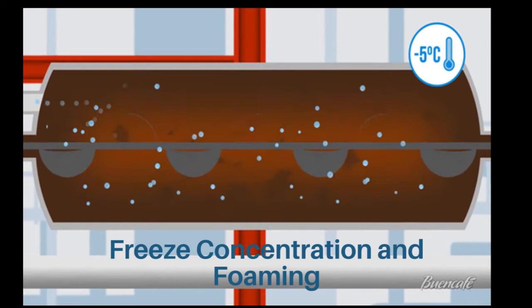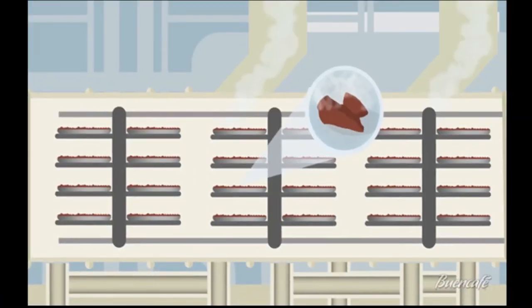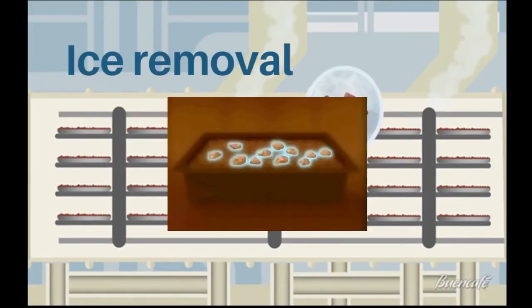The coffee undergoes a foaming process to increase the extract's porosity. Once foamed, the extract is placed in a cold room in which the product is frozen. After being granulated and classified, the frozen extract is heated in a chamber which allows the removal of all remaining ice. The result is a freeze-dried coffee with all the properties that make the coffee tasty.